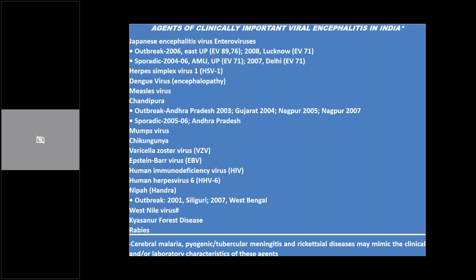Japanese encephalitis is very locally relevant — we have had many JE patients in our pediatric ICU. These patients have a very bad prognosis: around one third die, one third have persisting morbidity, and only one third survive without minimal deficits. The main important intervention is vaccination. Other conditions like Chandipura encephalitis also have endemic outbreaks, and the treating doctor should know when to suspect these particular diseases.